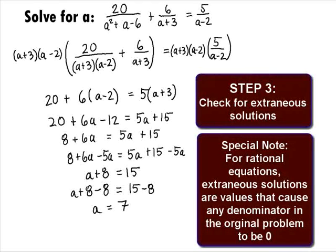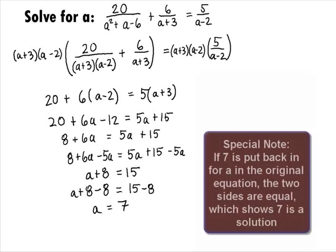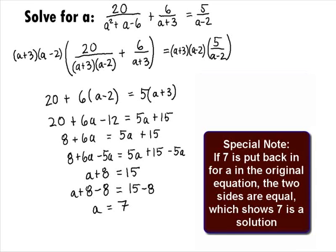In Step 3, we want to check for extraneous solutions. For rational equations, extraneous solutions are values that cause any denominator in the original problem to be 0. Of course, when we have 0 in the denominator, we have an expression that is undefined. So, we would have to throw out any values that would cause the denominator to be 0. Note that 7 does not cause any denominators to be 0, so it is not an extraneous solution. Also note that if we put 7 back in for a in the original problem, the two sides will be equal, which shows that 7 is the solution to our problem.